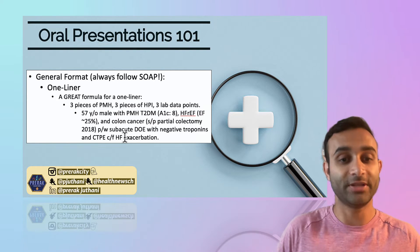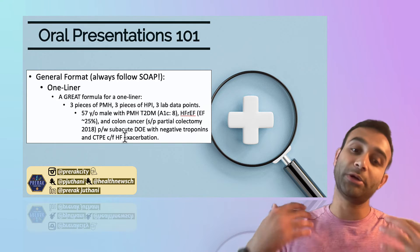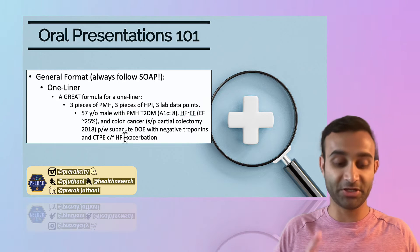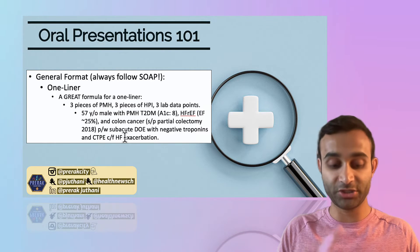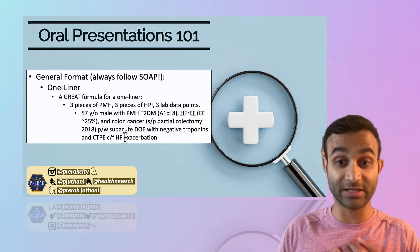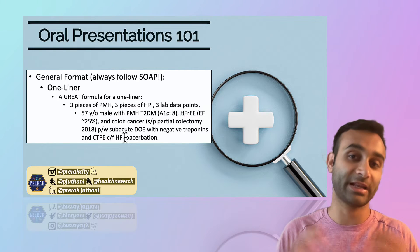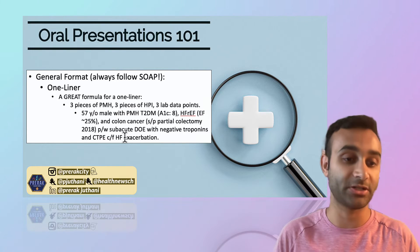So this is a one-liner. You can create a good one-liner by just having the age, gender, three pieces of the past medical history, three pieces of what they presented with, and three lab data points that can really piece the patient together.